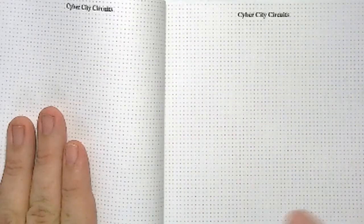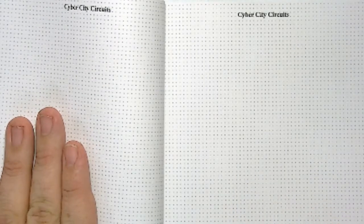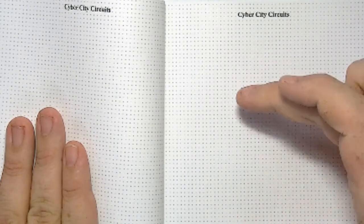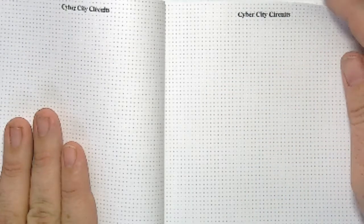And then you have these pages. Now these pages are 2.54 millimeters apart. They're pretty close. And that's important because that's the same spacing that's used in perf boards, and it's also used in breadboards.